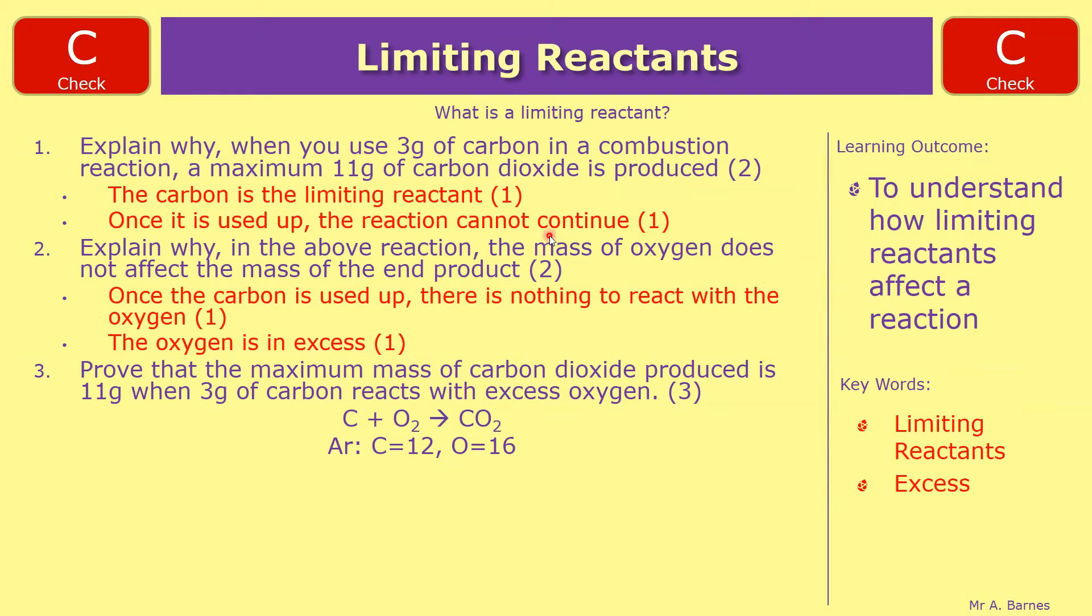And then finally for the three marker, prove that the maximum mass of carbon dioxide produced is 11g when 3g of carbon reacts with excess oxygen. So you're given the balanced symbol equation which is C + O2 → CO2, and then the atomic mass: C is 12 and oxygen is 16. So your first step is to work out the moles of carbon, which is mass divided by Mr. So 3, which is your mass, divided by your Mr of carbon, which is 12, gives you 0.25.